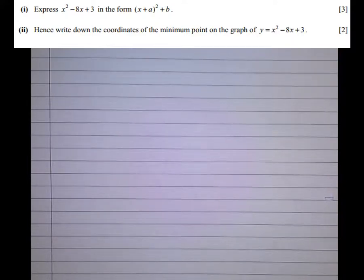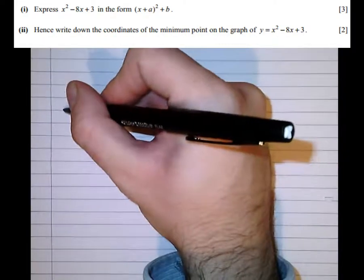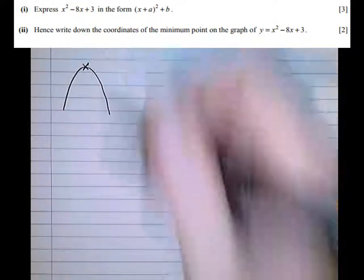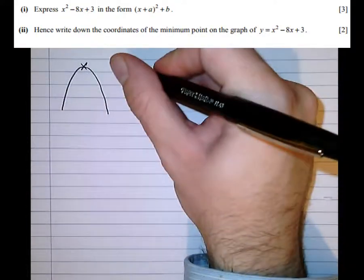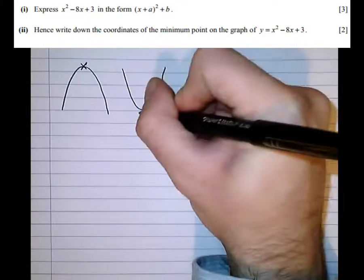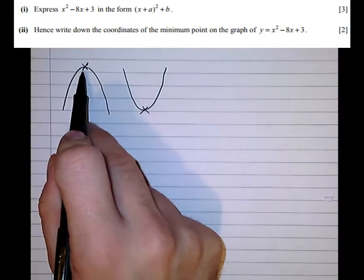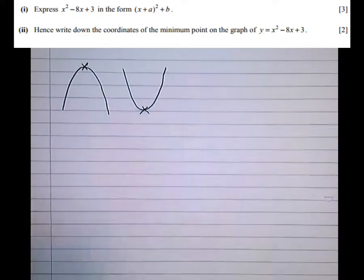So first of all let's talk about what the vertex of a quadratic actually is. Well the vertex of a quadratic is the turning point or maximum or minimum, the point at which the quadratic turns round again. So here's the vertex here for this one and here for this one.